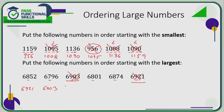Now we're looking at the 68xx numbers — there are three of them — and 6796. Since 6796 starts with 67, it's obviously the smallest, so that goes at the end. Looking at the digit after 68: we've got five, zero, and seven. Seven is the biggest, so 6874 comes first, then five is larger than zero, so 6852 is larger than 6801, which is larger than 6796. And we're done.